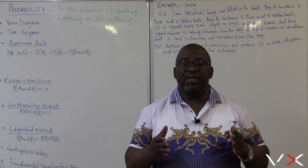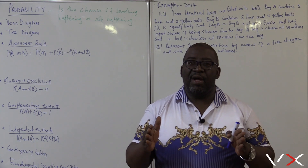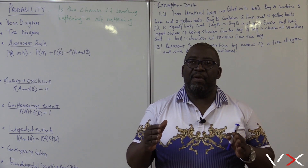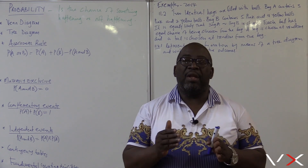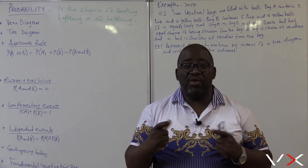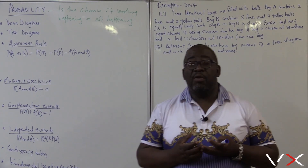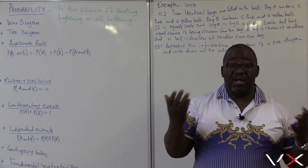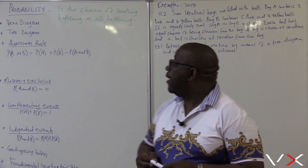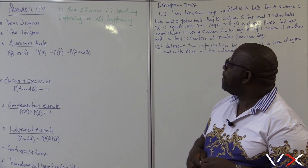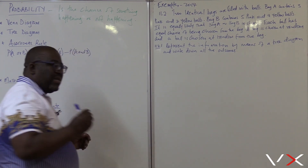Probability is always between 0 and 1. You can't find a Probability above 1. Once you calculate Probability and find a solution above 1, then you must know that something is wrong.